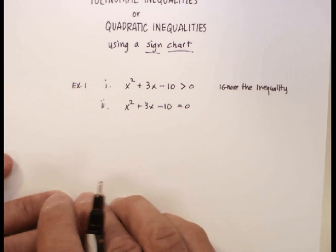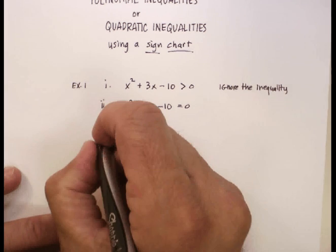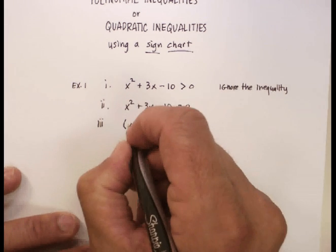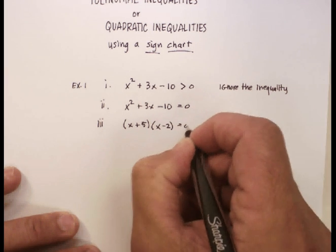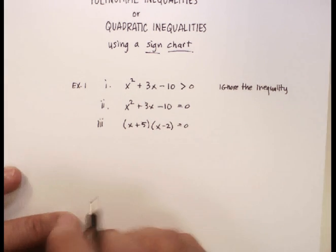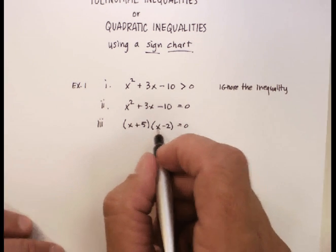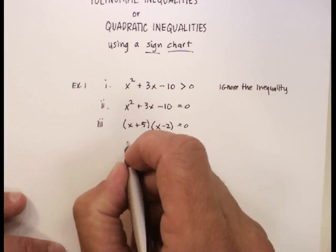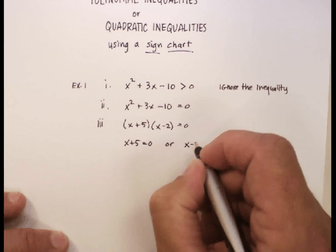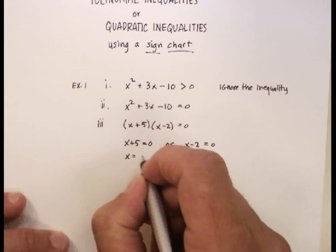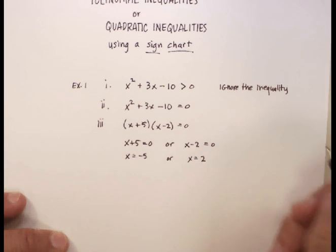And you'll notice that you can actually solve this particular problem by factoring, can't you? You'll notice that it'll be x plus 5 times x minus 2 is equal to 0. And once you've done that, that means that either this factor or this factor must be 0 in order for this to be true. Right? So we're going to say x plus 5 is equal to 0 or x minus 2 is 0, which means that x is negative 5 or x is a positive 2.